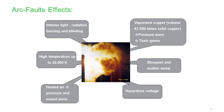Let's look at some effects of the arc. When we have an arc incident, there will be intense light, radiation, burning, and blindness. We will have vaporized copper or vaporized material, whatever is in the enclosure. With a very high volume, it will cause very high pressure and toxic gases. We might have shrapnel and molten metal, and high voltage will definitely be present. Heated air, pressure, and sound waves — and finally, very high temperature, up to 20,000 Kelvin.